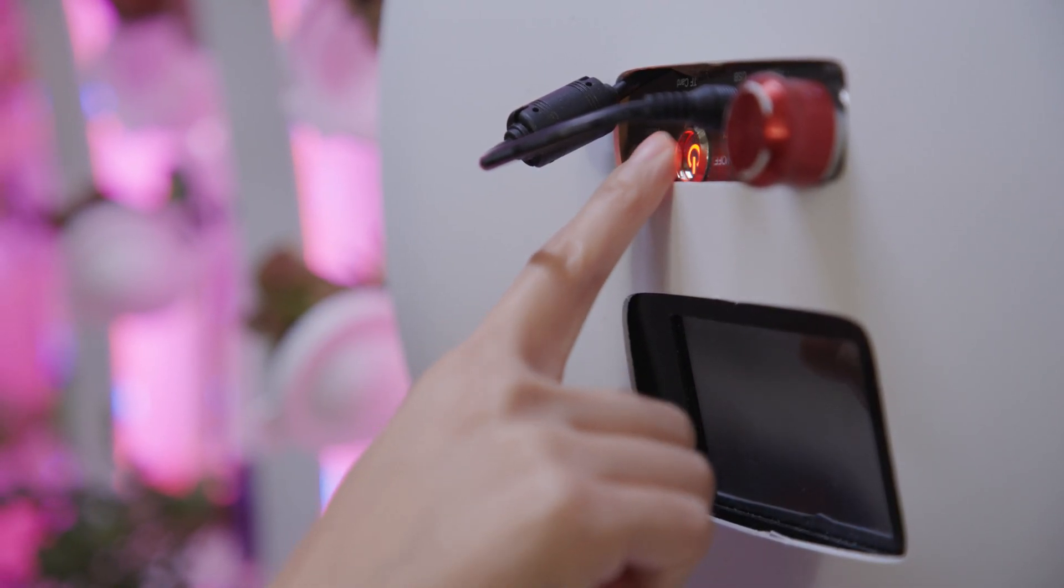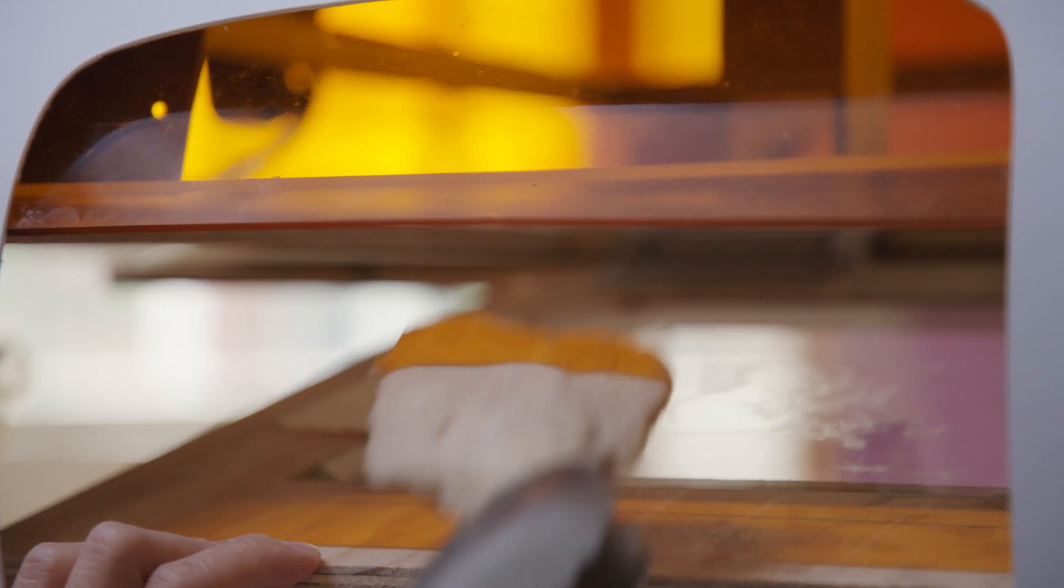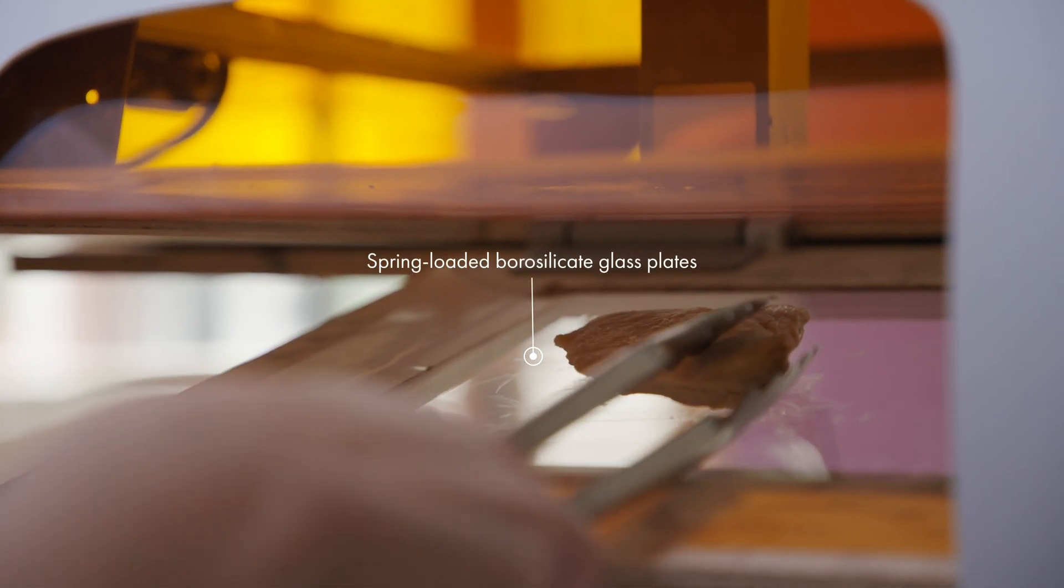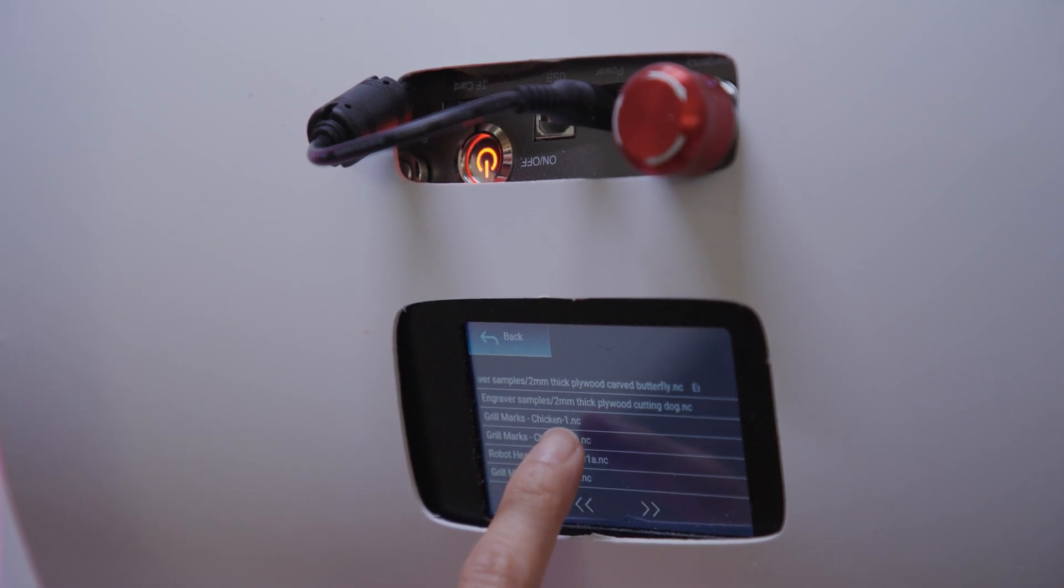Next, turn on the grill, open the orange safety door, and place the meat between the spring-loaded borosilicate glass plates. Once the door is closed, use the display to turn on the laser. Grill marks will appear in the same amount of time it takes for it to be microwaved on earth.